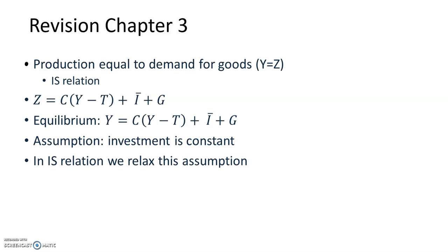We assumed that consumption was a function of disposable income — that is, income minus taxes — and took investment spending, government spending, and taxes as given. So we had Z = C(Y − T) + Ī + G, and the equilibrium condition was Y = C(Y − T) + Ī + G. The assumption was that investment is constant. In the IS relation, we relax this assumption.